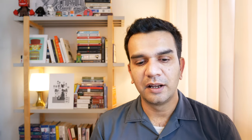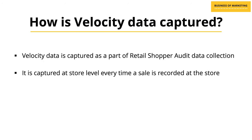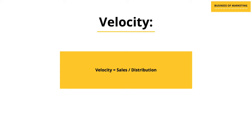So what exactly is velocity? How do you go about defining velocity? It is very simple. Velocity is a measure that tells you how fast a product, a brand, or a category is selling when it is made available for consumers to buy in the stores. Velocity data is captured as part of the overall retail shopper audit — every time a sale is recorded in any of the stores. The formula is: Velocity equals Sales divided by Distribution.